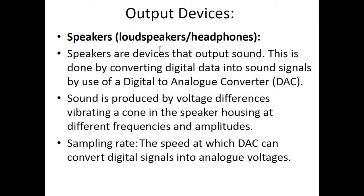In speakers the opposite happens: the computer provides digital data which goes into a DAC (digital to analog converter), converting it into electrical signals. Those electrical signals are given to a coil wrapped around a magnet; when the electrical current is provided to the coil it vibrates because there is a magnetic field around it, and when it vibrates the attached cone of the speaker also vibrates, producing sound. A term you should know about speakers is sampling rate — the speed at which a DAC can convert digital signals into analog voltage.